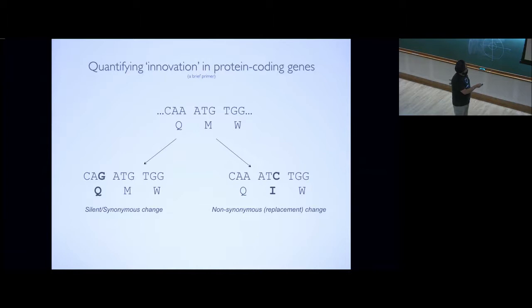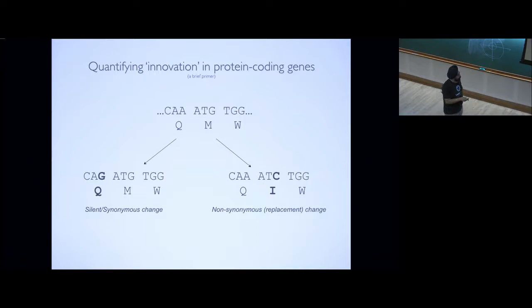The second assumption is that silent changes are indeed silent to natural selection. That is actually also false, because these mutations can still affect things like RNA stability and protein translation rates. But this assumption works as a first-order approximation because the selective coefficients of this class of mutations are far less than the selective coefficients associated with non-synonymous mutations.